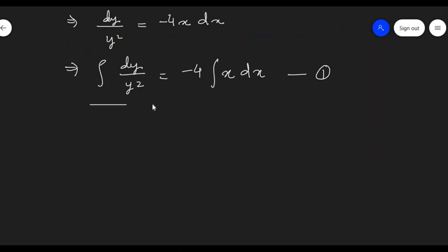To integrate on the left hand side, we are going to use the identity used to integrate x^n, which is x^(n+1)/(n+1). Here, in place of n, we have the power of y as -2. So, let's integrate.